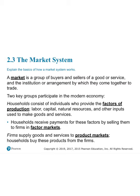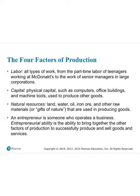A market is a group of buyers and sellers of a particular good or service, and the institution by which they come together to trade, facilitated through currency. Two key groups: households, which provide the factors of production — labor, capital, natural resources, and entrepreneurial ability — and receive payments in factor markets; and firms, which use those factors to produce goods and services and supply them to product markets.